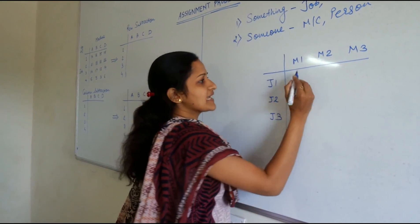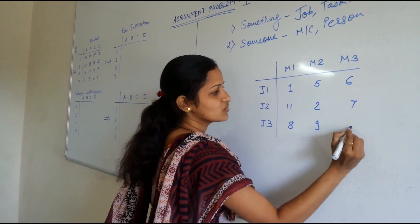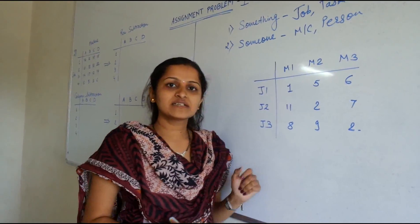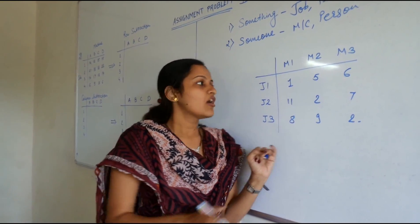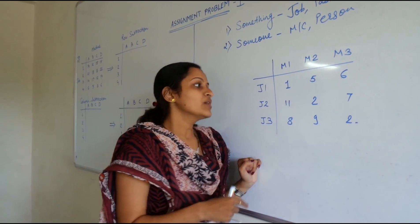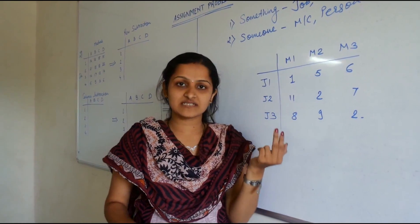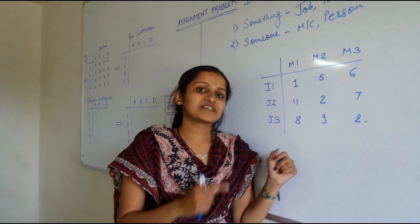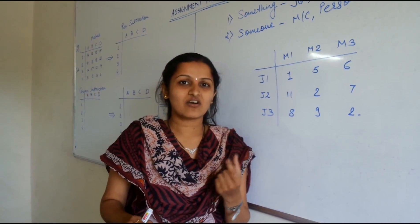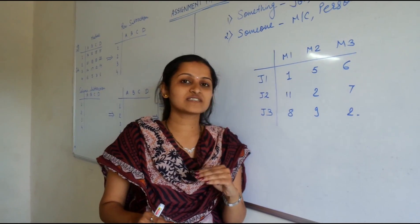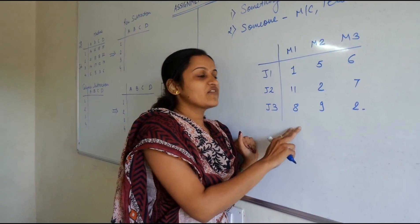Now there are some numbers — consider random numbers like 1, 5, 6, 11, 2, 7, 8, 9, 10. These numbers are nothing but effectiveness factors. This can be anything — it can be your profit figures, sales figures, or it can be cost or time. If these figures are profits or sales, this type of assignment problem will be a maximization type of problem, because we always try to maximize profit and sales. But if the figures are given as cost or time, we always try to minimize cost and time, so in that case this will be a minimization type of assignment problem.